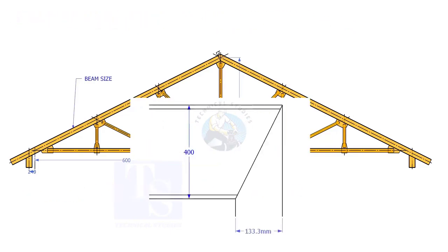Proportionate to the span and the height, the cutback for a 400mm wide beam is 133.3mm.